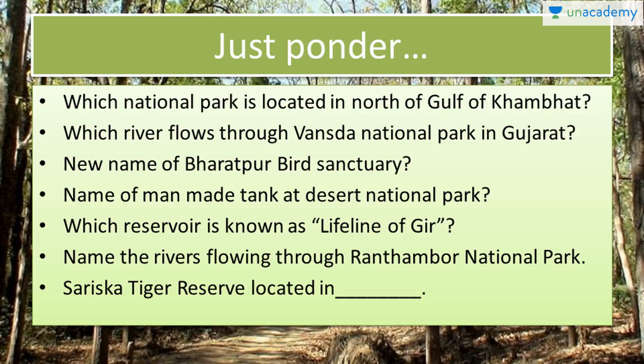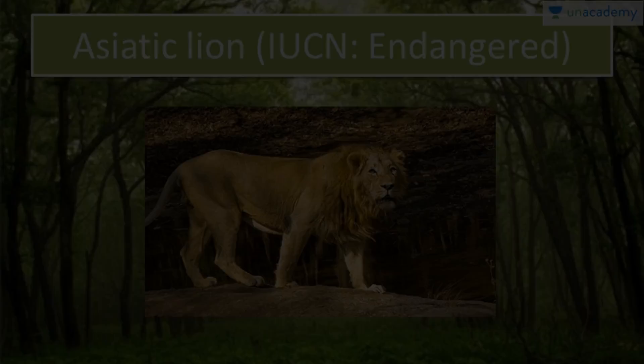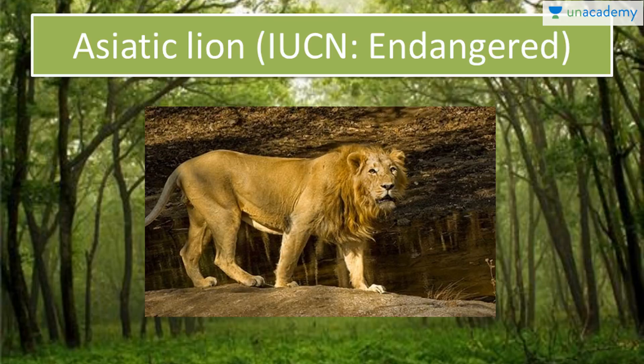Here we have the animal species found at these national parks. First we have Asiatic lion, found in Gir National Park — it is an endangered species as per IUCN. IUCN stands for International Union for Conservation of Nature and Natural Resources. They compile the list of animals which are endangered, extinct or vulnerable to protect them from extinction, and maintain a Red List and Red Data Book for that.